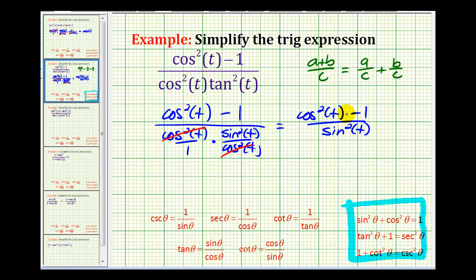If we take a look at the Pythagorean identities again and focus on this first identity, if we were to subtract sine squared theta on both sides and then subtract one on both sides, we would have cosine squared theta minus one equals negative sine squared theta. So we can use this form of the identity to replace cosine squared t minus one with negative sine squared t.